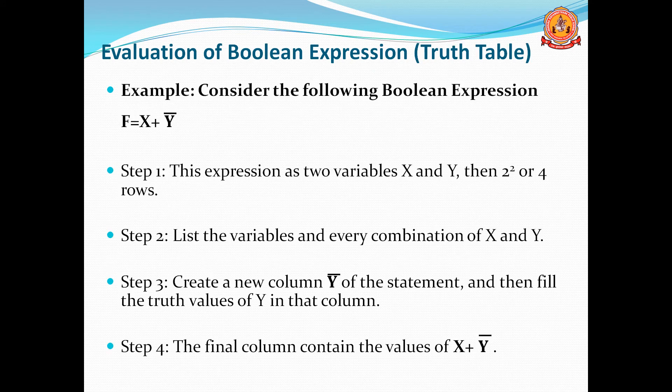We will take one example. Consider the Boolean expression f = x + y'. This expression has two variables: x and y. So we require 2^2 = four rows. Then list the variables — write all the possible combinations for x and y, and list the values for every combination of 0 and 1.